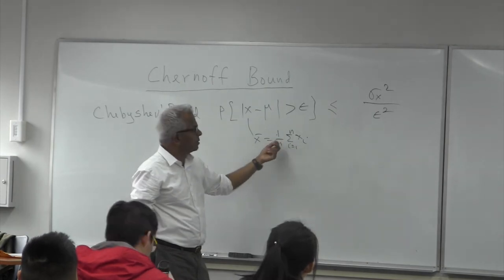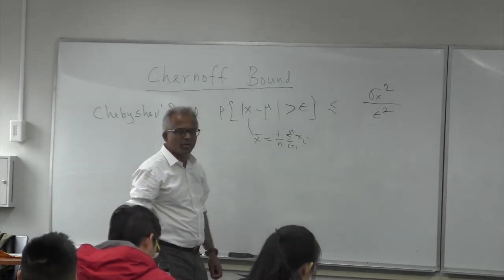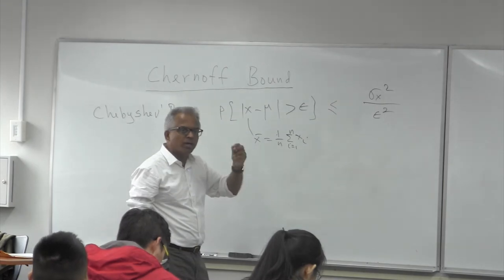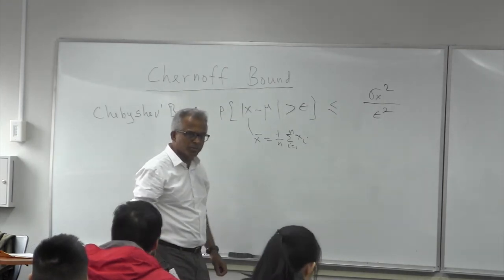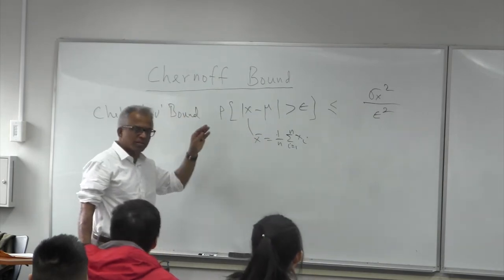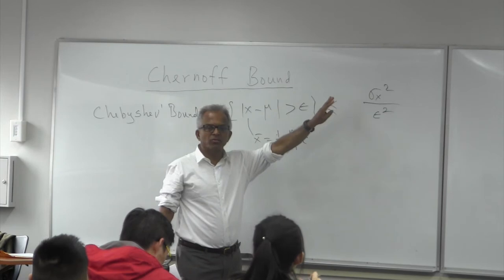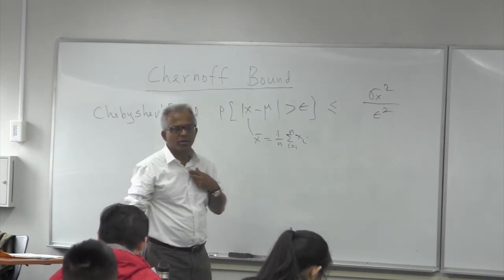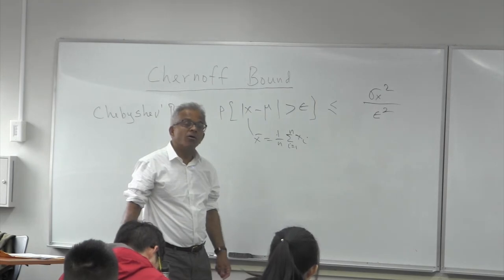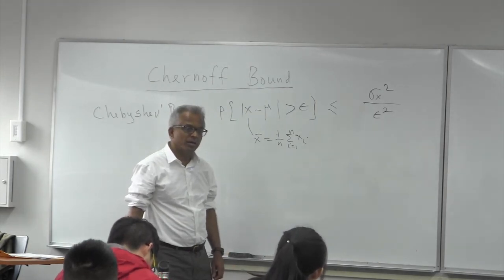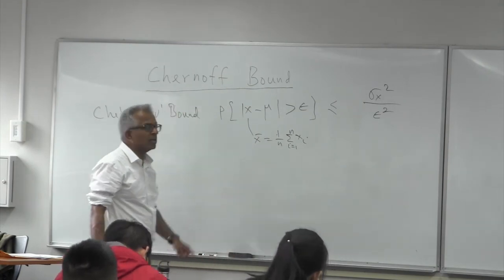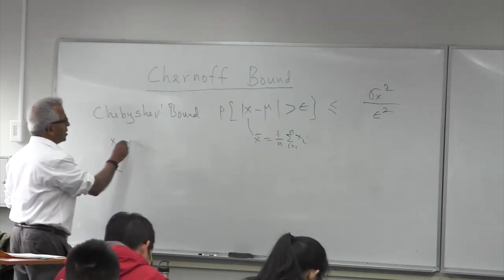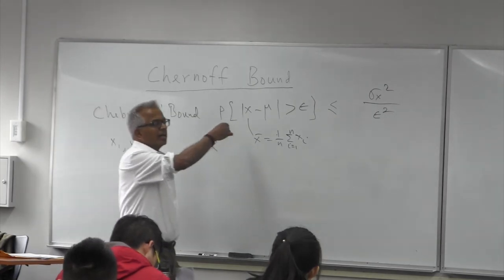Even if the random variables are independent, the variance will be the sum of the variances. But even then, you are only using pairwise independence of any two random variables, not all of them at the same time. That is the Chebyshev limitation — in computing the variance, even if the random variables were mutually independent, you get the same result. This is true for any set of random variables.